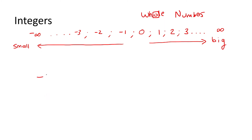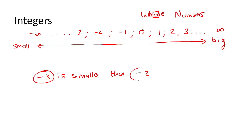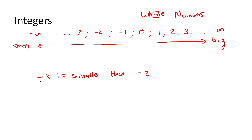So minus three is smaller than minus two. Even though the number three is bigger than the number two, when you are busy with negative numbers, then it's the opposite. Minus three is actually going to be smaller than minus two. But we will go through that in detail in this lesson and in future lessons.